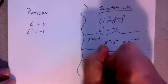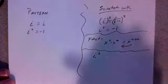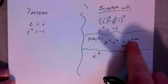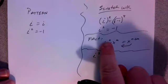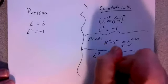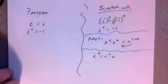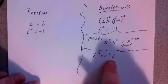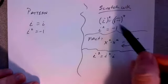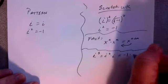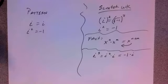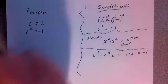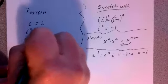If I take a look at i to the 3rd, i to the 3rd could be considered as i to the 2 plus 1, so i squared times i to the 1st. That means i to the 3rd is i squared times i. Well, i squared is negative 1, so I could rewrite this as negative 1 times i, and simplified, negative 1 times i is just negative i. So in our pattern, i to the 3rd is negative i.